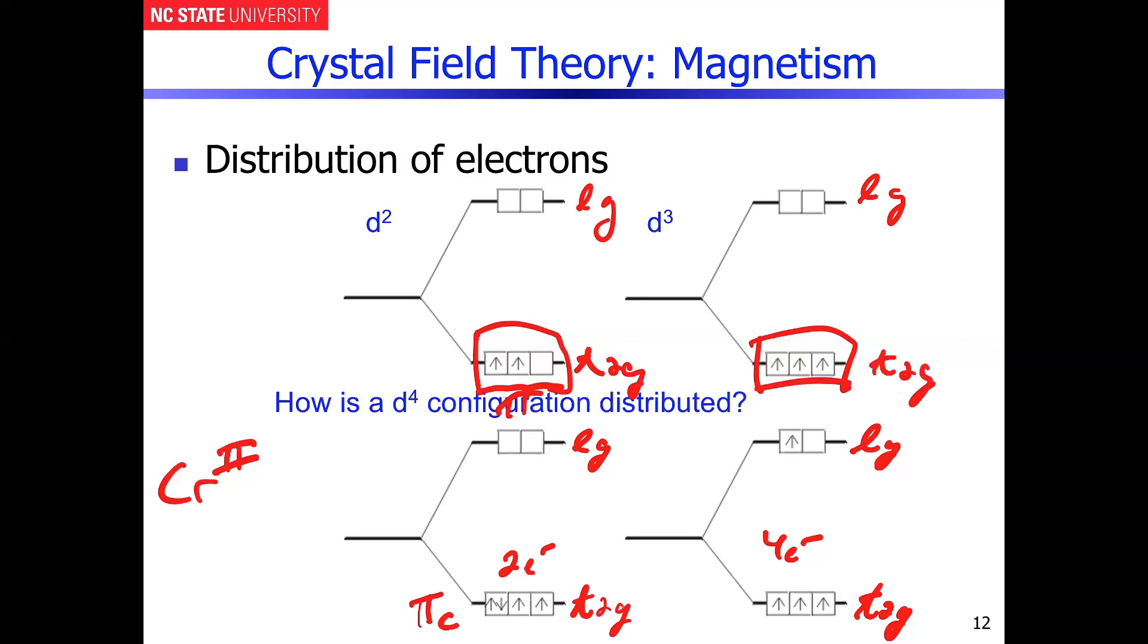And then you kind of get to this situation of which one do you get? And if you get the one on the left, that's called the low spin configuration because it minimizes the number of spins. If you remember, that's minimizing spin multiplicity. So that's called the low spin D4 configuration. And then, of course, over here is going to be the high spin D4 configuration.